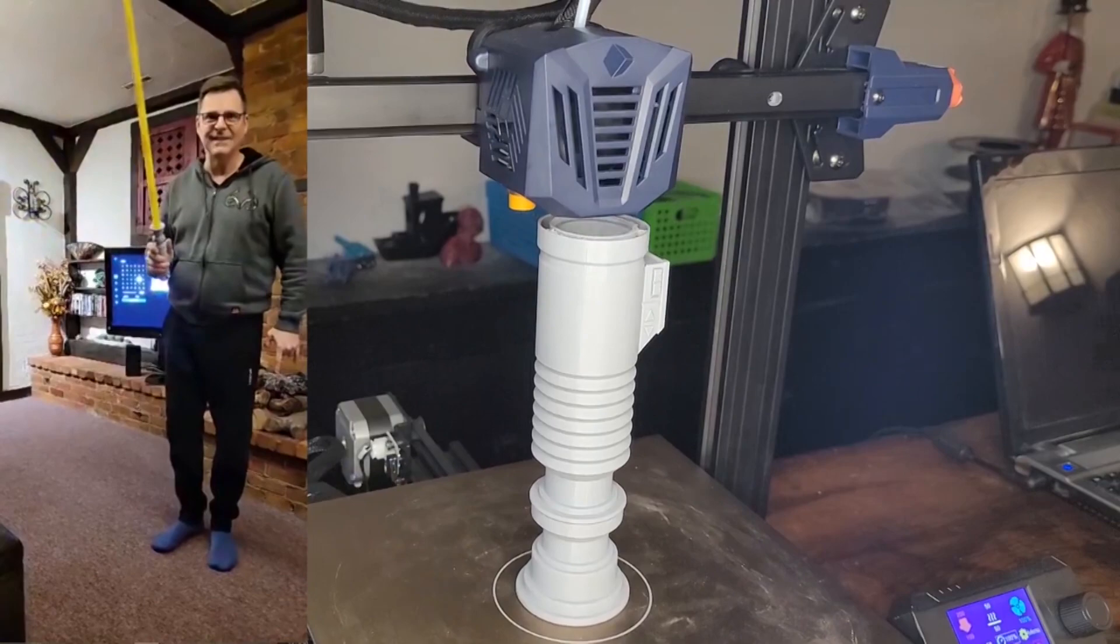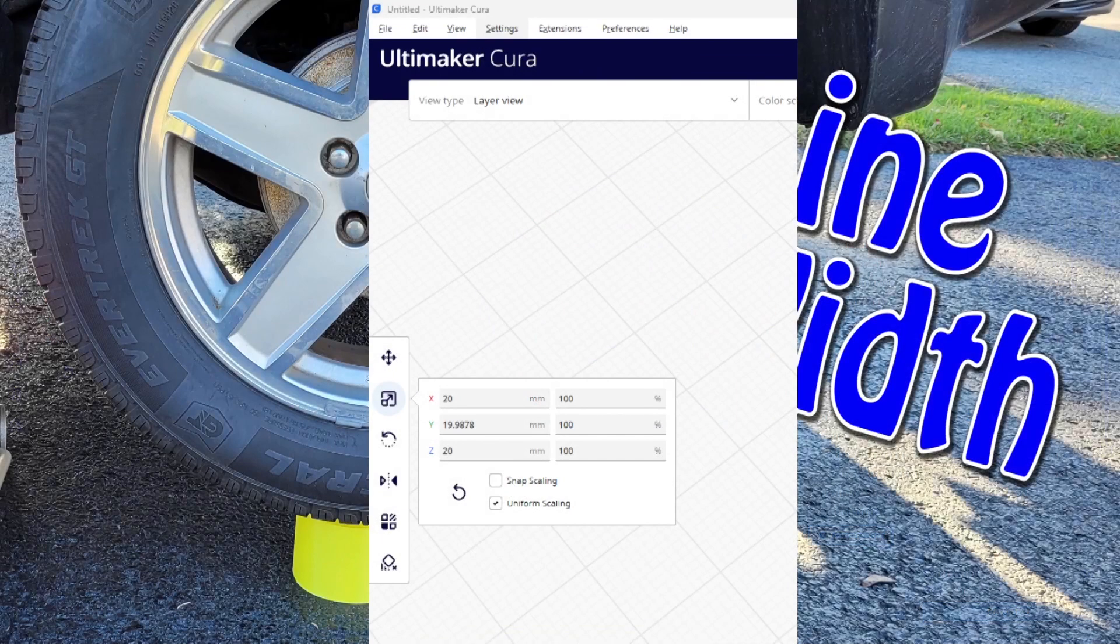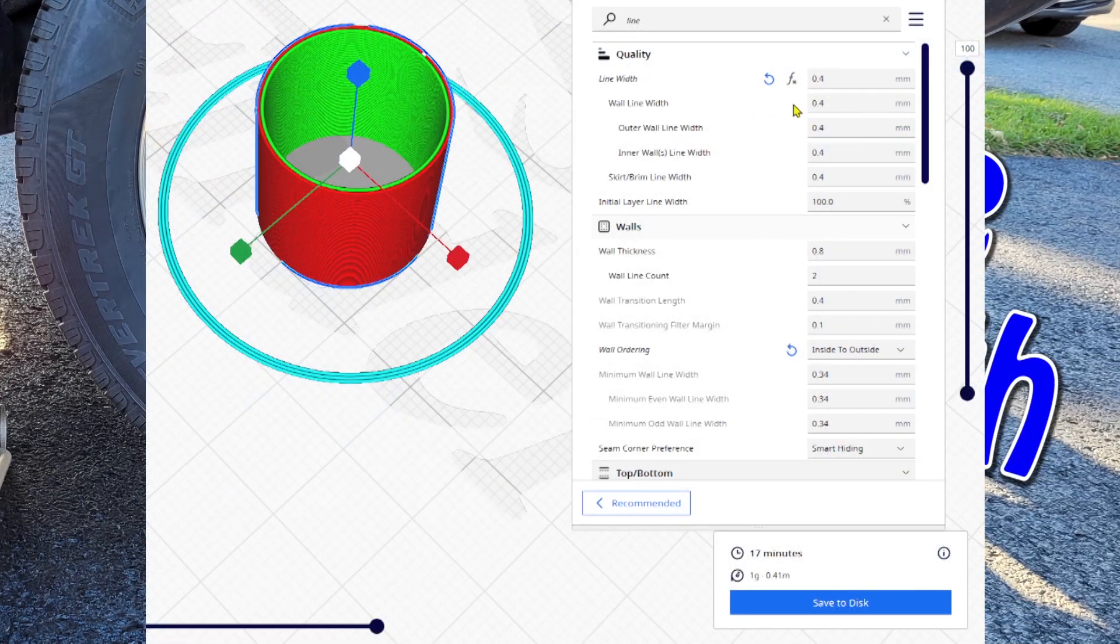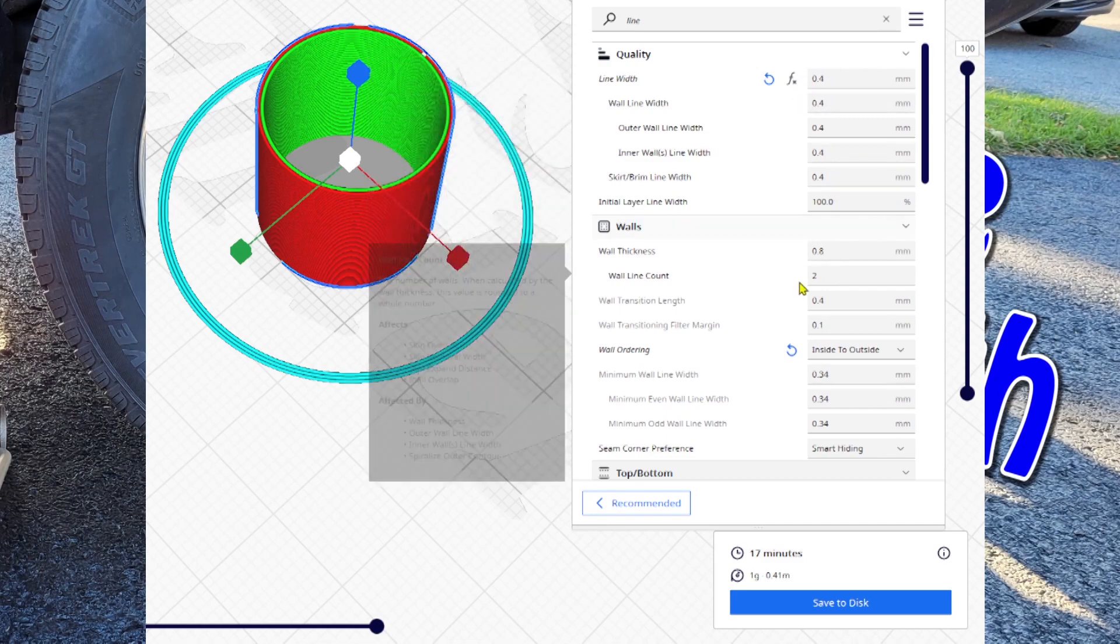Single walls and would it be stronger? So for my test I'm using a very simple 20 by 20 by 20 millimeter cylindrical tube. As you can see here, I've got it set up to the standard 0.4 millimeter line width and I've got two lines. You can see both lines over here in the image on the left, and then you can see that it's a total of 17 minutes. This does not include the warm-up time.